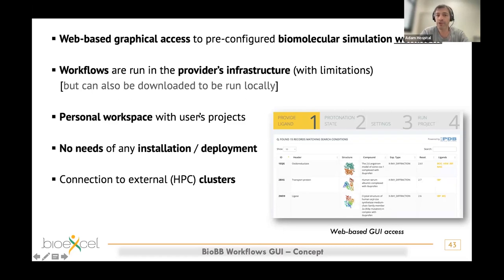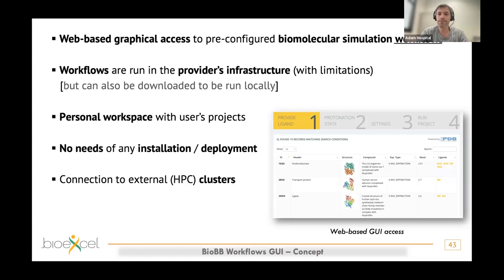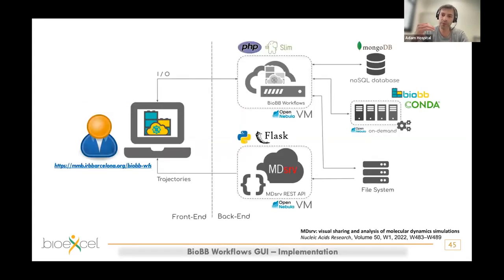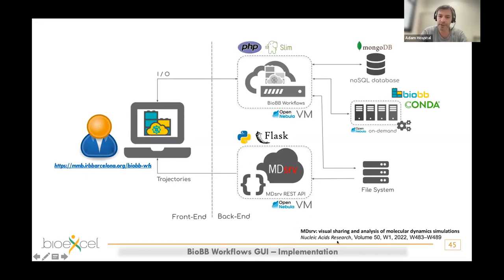There is a personal workspace with all user projects, no need for any installation if you run them on the website, and a possibility to connect the web server to external clusters. The implementation is a bit more complicated than the REST API but shares the first part: a database, private infrastructure with all BioBB building blocks installed, and also a file system where trajectories are written. Trajectories can be streamed directly to the user using the fantastic MDsrv technology — basically streaming all trajectory information to the user through the website.